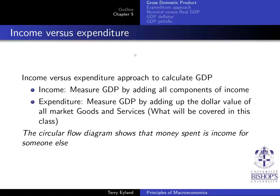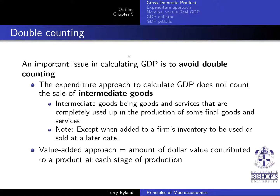We could either add all components of income or add all dollar figures of all the goods and services produced. An important issue in calculating GDP is to avoid double counting. The expenditure approach does not count the sale of intermediate goods — goods and services that are completely used up in the production of some final goods and services. Note that we do count intermediate goods when they are added to a firm's inventory to be used or sold at a later date.